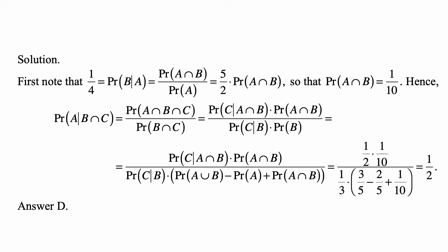For now we'll leave the numerator as is. We write probability of B as probability of A union B minus probability of A plus probability of A intersection B. That's from the formula for probability of A union B: probability of A union B equals probability of A plus probability of B minus probability of A intersection B. Therefore, probability of B equals probability of A union B minus probability of A plus probability of A intersection B. Now every single piece in this formula is given in the problem.